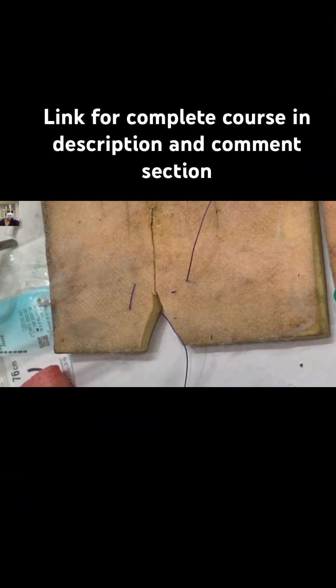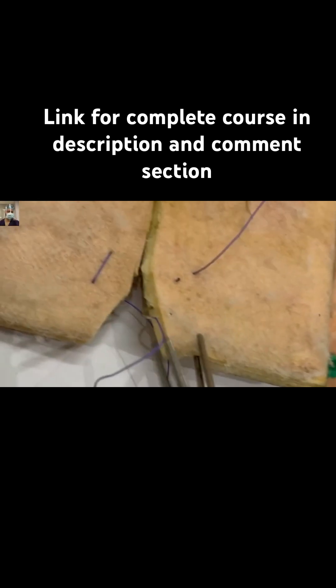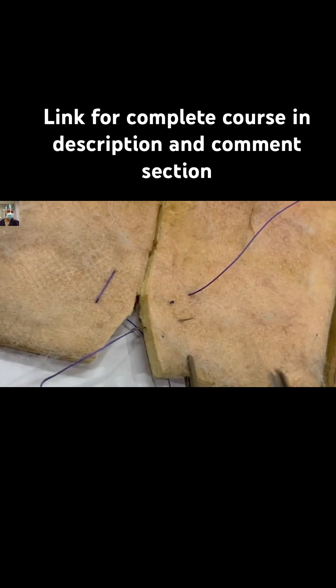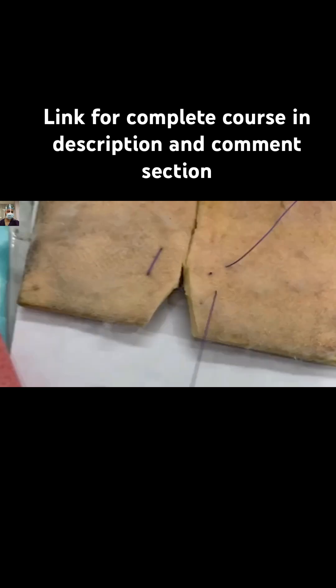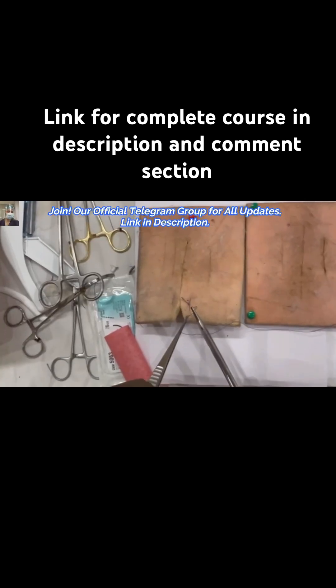We will advance 4mm with each bite, and this first bite is repeated. As you can appreciate, we are not including the mucosa in this horizontal mattress suture. It is simply the same technique as described for the buried suture.